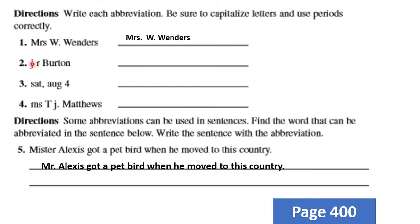Number two: J.R. Burton. For example, John Ron Burton — J is capitalized and there is a dot. The initials of names are the first letters of each word and can be abbreviated. So: capital J dot, capital R dot, Burton.